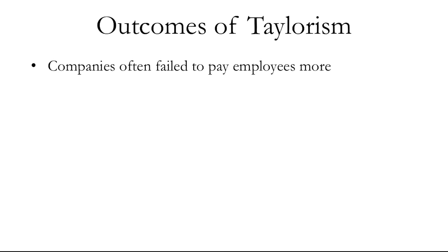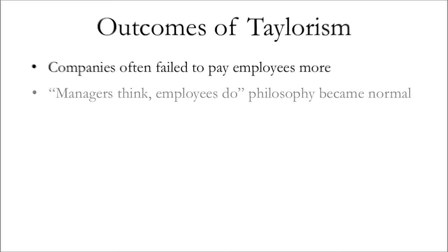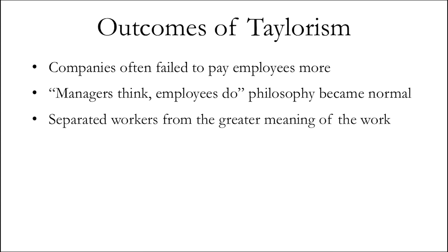On the other side of the coin, there are some outcomes that were not so great. Companies often failed to pay employees more, which was a central part of Taylor's advice — you have to pay people more to hang on to the best people and keep them motivated. Ford took that advice and paid people double the going rate at the time, which is one of the key reasons Ford had such great people and thrived. Most companies, however, did not do that. Managers think, employees do became a philosophy that became normal.